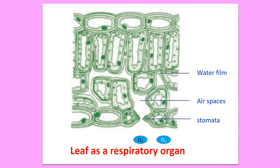When the oxygen is used up by the cells, a variation in the concentration of gases occurs. Due to this, the air in the air spaces passes to the cell. In the same way, variation also occurs between the air in the air spaces and the air outside the stomata, and the oxygen from outside passes in through the stomata to the air spaces.